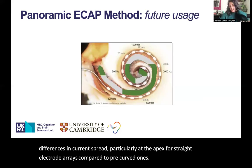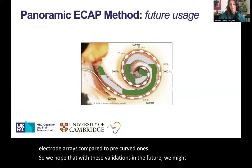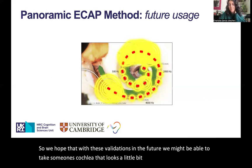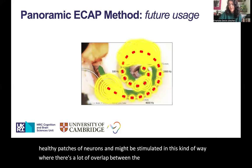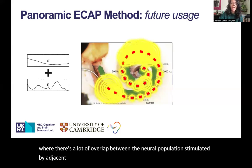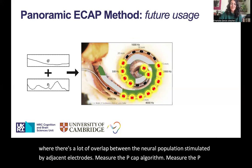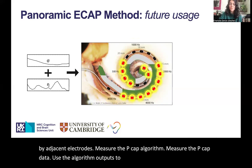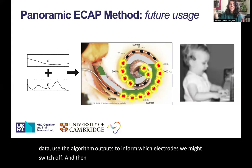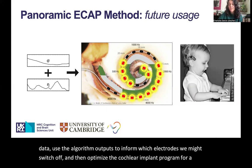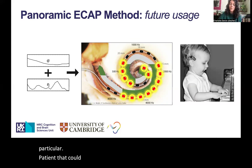We hope that with these validations, in the future we might be able to take someone's cochlea with some not-so-healthy patches of neurons that might be stimulated in a way where there's a lot of overlap between the neural populations stimulated by adjacent electrodes, measure the PCAP data, use the algorithm outputs to inform which electrodes we might switch off, and then optimize the cochlear implant program for a particular patient — that could, for instance, bring this little girl's auditory world into sharper focus.